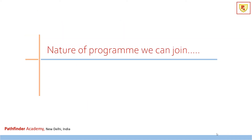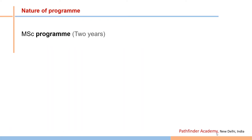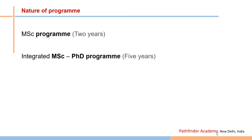Now let's understand the nature of programs available at this level. We have two options: a two-year MSc program, and a five-year integrated MSc-PhD program. Very few universities and institutions offer the integrated MSc-PhD program; most offer the standard two-year MSc program.